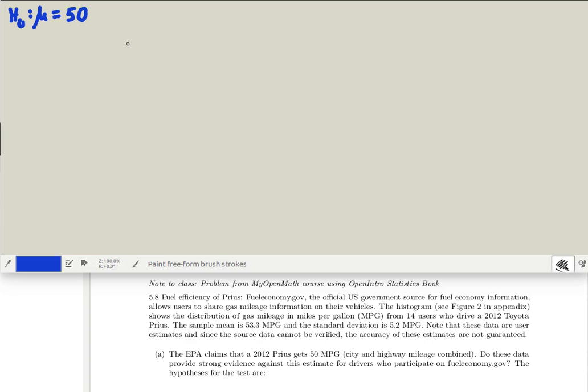The null hypothesis is that the average miles per gallon is 50. That's what the claim of the EPA is. The alternative hypothesis is that it's not equal to 50. That is, that it's less than 50 or that it's more than 50. That means that we'll be looking at a two-tailed test.